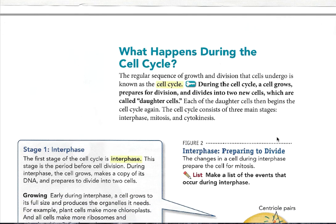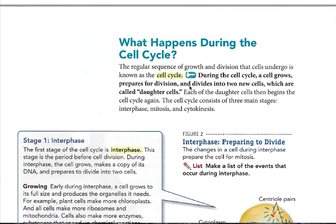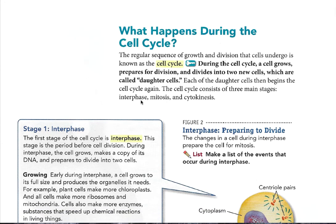What happens during the cell cycle? The regular sequence of growth and division that cells undergo is known as the cell cycle. During the cell cycle, a cell grows, prepares for division, and divides into two new cells, which are called daughter cells. Each of the daughter cells then begins the cell cycle again. The cell cycle consists of three main stages: interphase, mitosis, and cytokinesis.